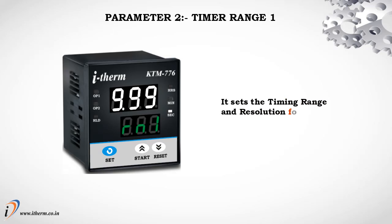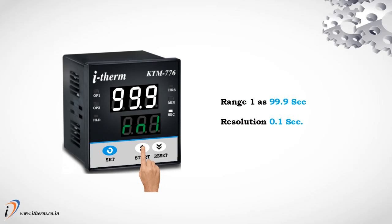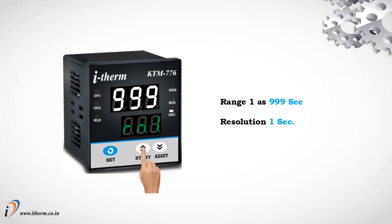Parameter 2: Timer Range 1. It sets the timing range and resolution for parameter Set Time 1. Range options: 9.99 seconds with resolution 0.01 seconds; 99.9 seconds with resolution 0.1 seconds; 999 seconds with resolution 1 second.